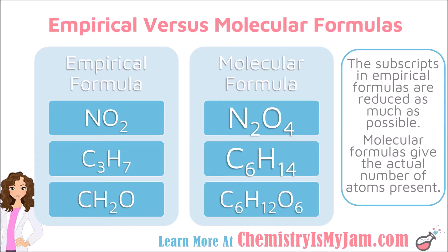This video is going to focus on empirical versus molecular formulas. These are two types of formulas that can be used to represent a compound. The difference between the two is that an empirical formula is always going to be reduced as much as possible — the numbers are in their lowest possible form — whereas a molecular formula counts the actual number of atoms present.